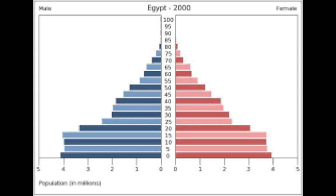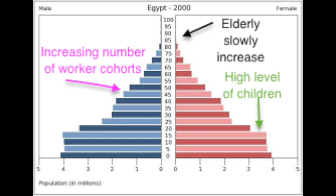Let's take a look at a population pyramid for stage two of the demographic transition model. Here we have a wide base and narrow top still, but we are starting to see a little increase in older people. We still have a high level of children, but the middle is starting to widen. We're starting to get people living to older ages, so those worker cohorts are widening, meaning we'll have more workers to take care of the dependents.